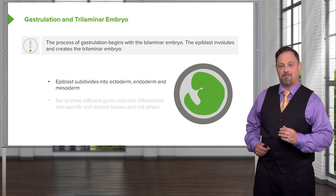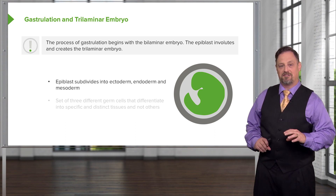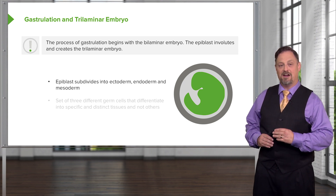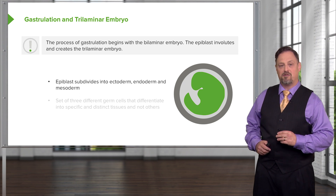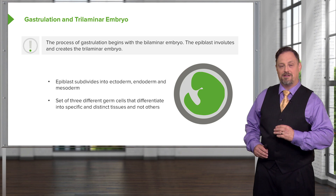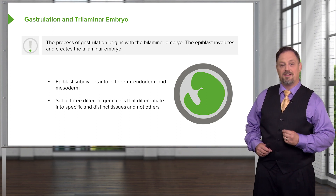The epiblast of the bilaminar embryo, which can create any structure in the human body, subdivides into three layers: the ectoderm, the endoderm, and the mesoderm. At that point, these layers have distinctive fates.